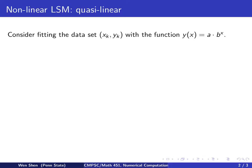The first example of nonlinear least square method is what we call quasi-linear. That means after some variable change, some manipulation, we can change the problem into a linear problem. So consider now we have a data set (xk, yk), and we want to fit in with the function y equals a times b to the power x.